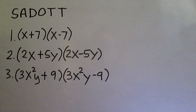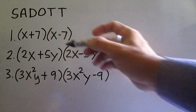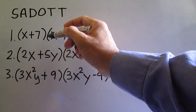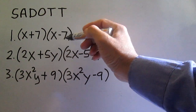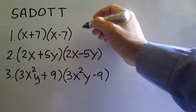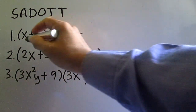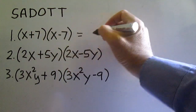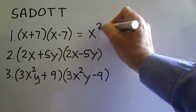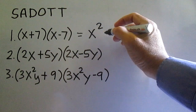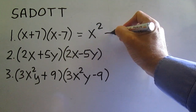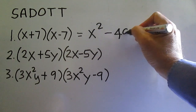Find the product. The quantity x plus 7 times the quantity x minus 7. To find the product, square the first term: x times x is x squared, minus the square of 7 which is 49. So the answer is x squared minus 49.